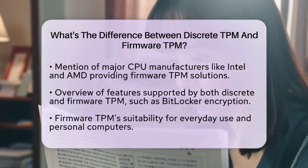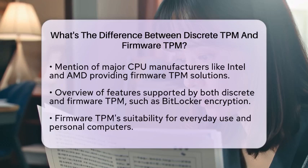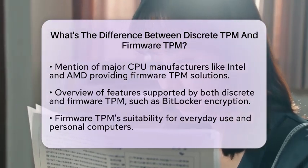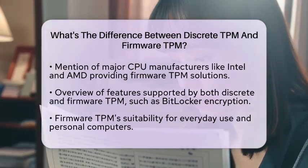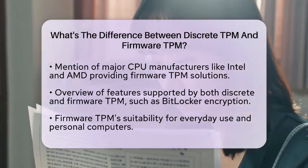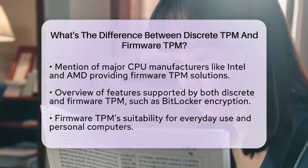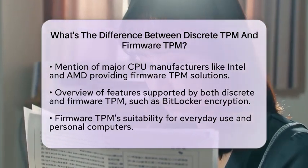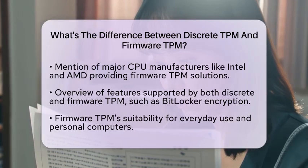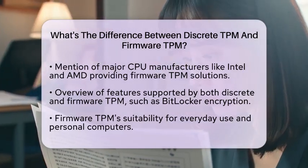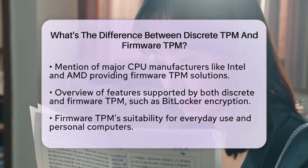One of the advantages of firmware TPM is that it is more cost-effective and space-saving. This makes it an attractive option for smaller devices or integrated systems where adding a separate chip may not be practical. Major central processing unit manufacturers, like Intel and Advanced Micro Devices, provide their own firmware TPM solutions, which can often be enabled or disabled in the basic input-output system settings.